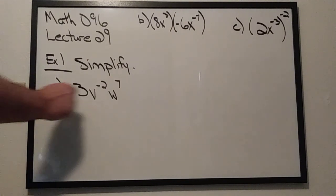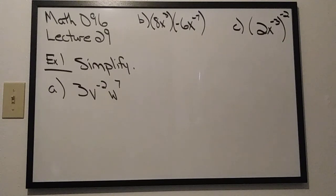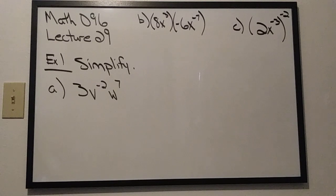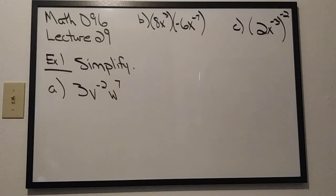With that in mind, let's check out Part A. For Part A we have 3v to the negative second power times w to the seventh power. One of the warnings I gave you when we were talking about the exponent of 0 was that you had to be careful about seeing which pieces did and did not have that exponent. The same warning applies when looking at negative exponents — you have to ask who does and who does not have a negative exponent.